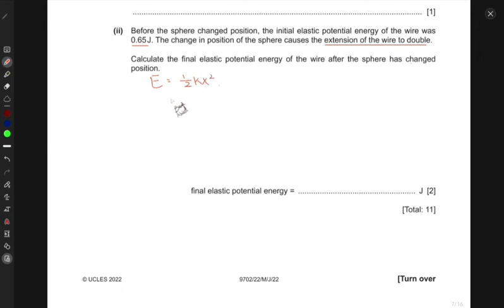Which means that we know that the extension or the elastic energy is half KX squared. Now, we know that we have an equation for F is equal to KX as well. We don't know K in this part, but we know this equation. So we can just substitute for K as F over X. This would become equals half F over X times X squared. So this would become half F times X. Now we know everything. So it is, it would be 0.65 into, sorry, this would be equal to 0.65, which is equal to half F times X.